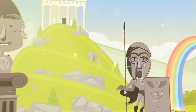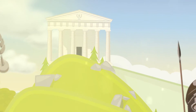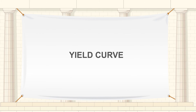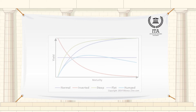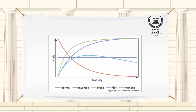Welcome to the Investors Trading Academy talking glossary of financial terms and events. Our word of the day is yield curve — shorthand for comparisons of interest rates on government bonds of different maturity. If investors think it is riskier to buy a bond with 15 years until it matures than a bond with 5 years of life, they will demand a higher interest rate or yield on the longer dated bond.